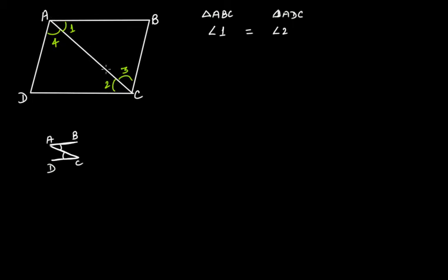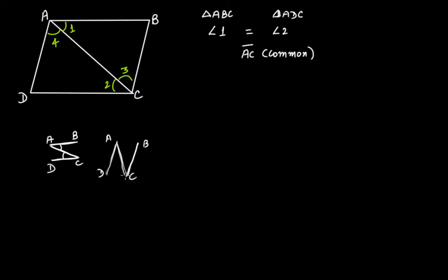Now this connecting side AC is common to both triangles. And just as we have seen for this pair of parallel lines, we can see the same for AD and BC — alternate interior angles will be equal. Therefore angle 4 is equal to angle 3. So angle 3 of triangle ABC is equal to angle 4 of triangle ADC.